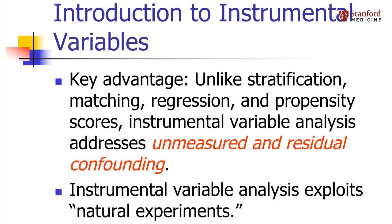It does this by exploiting natural experiments where some of the variation in an exposure is due to a random event. For example, some people carry a gene that makes alcohol drinking unpleasant. The gene is essentially randomly assigned at birth and it partially determines one's alcohol exposure, so we can use this gene to study the effects of alcohol.